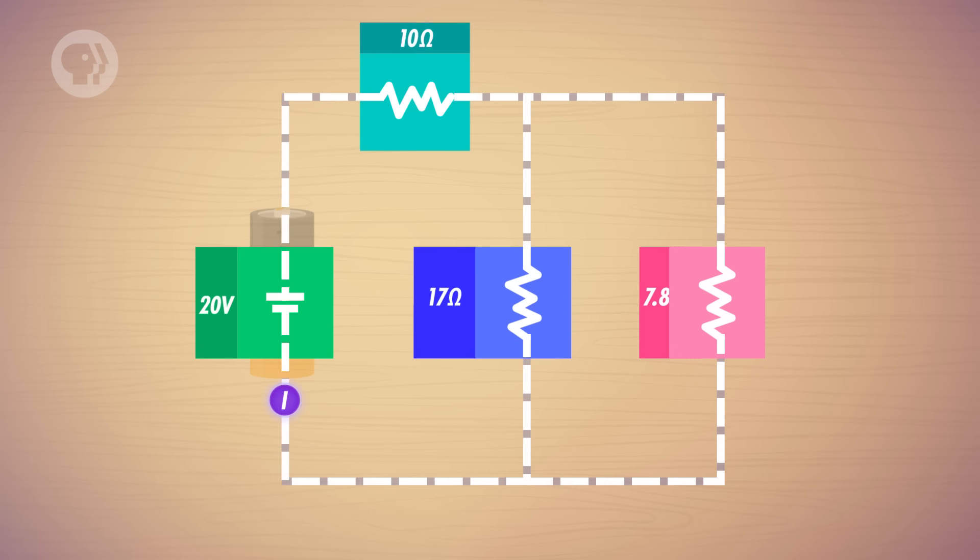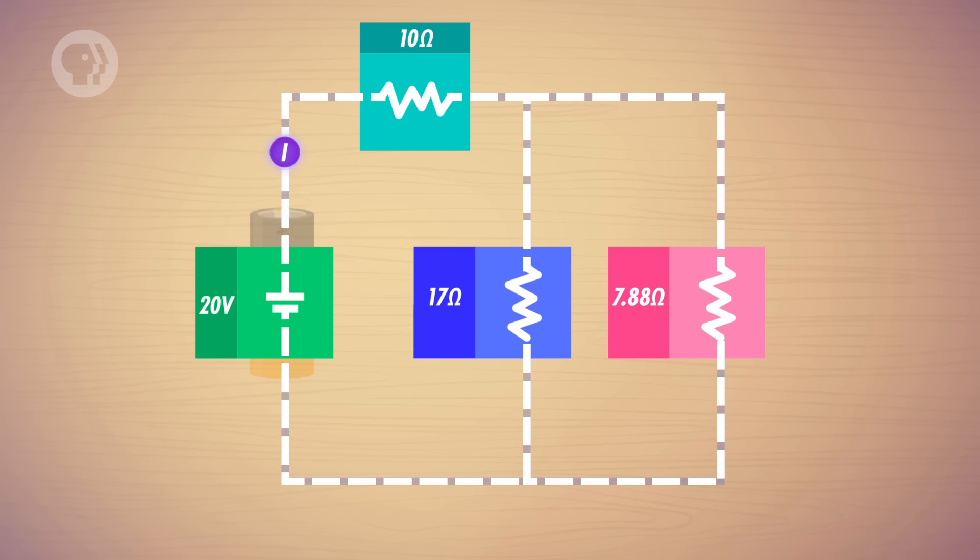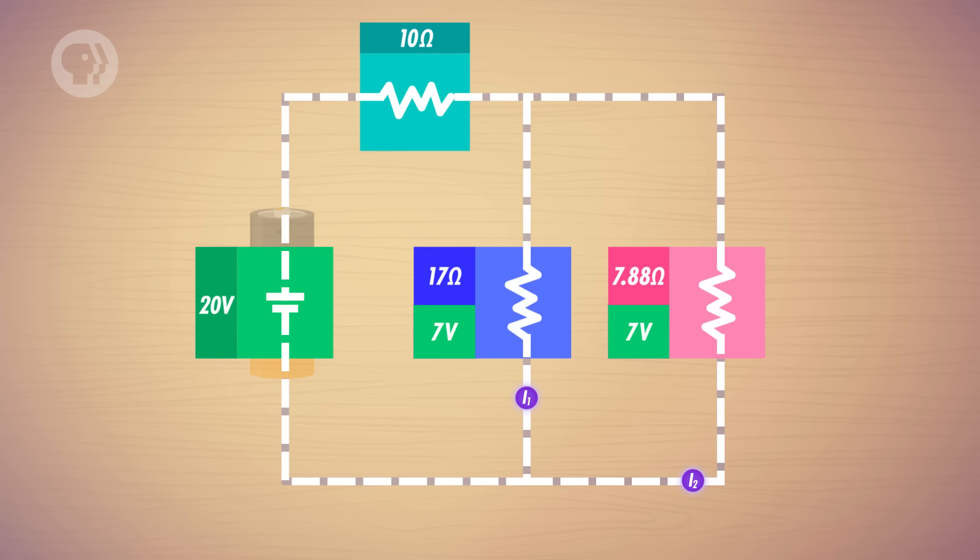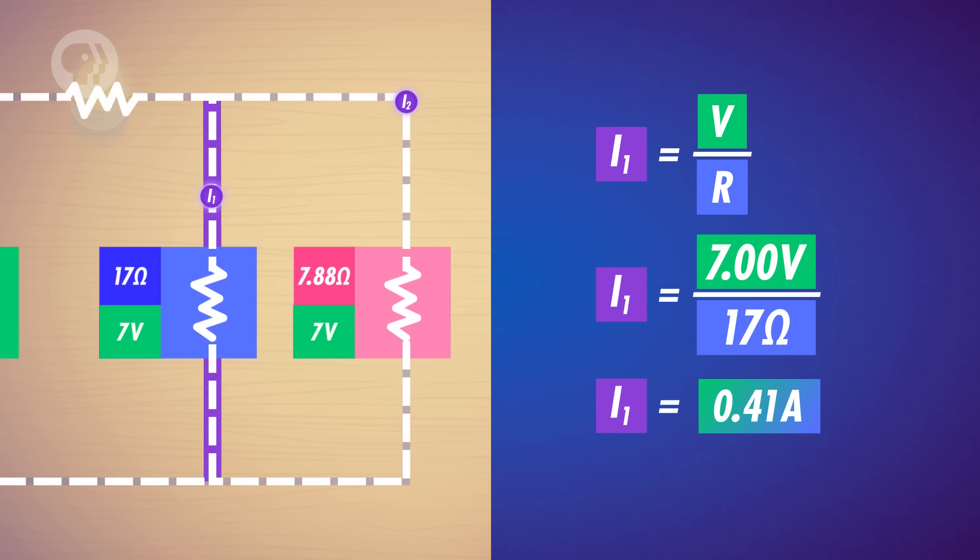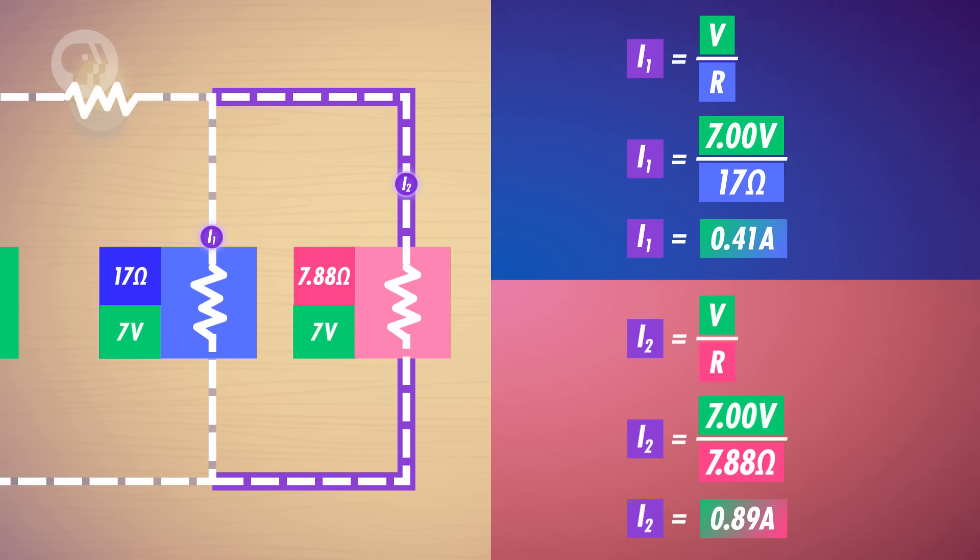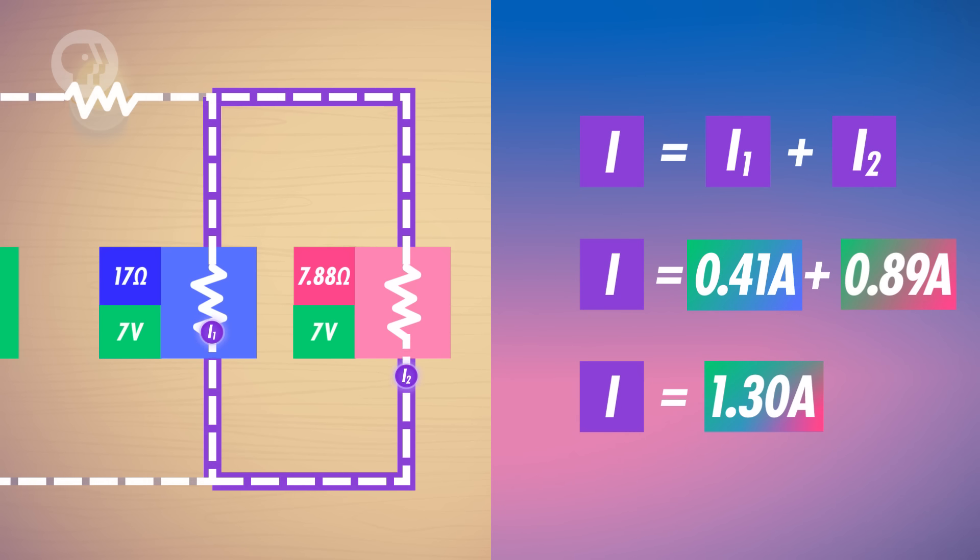In order to complete the rest of the circuit, let's expand the 5.38 ohm resistor back out again, to those two resistors in parallel. Now, you know that any two resistors in parallel have the same voltage drop. So both the 17 ohm resistor and the 7.88 ohm resistor have a voltage drop of 7 volts, just like when they were collapsed into one. But the current through each branch is not the same. Since you know the resistance of, and the voltage across, each resistor, you just use Ohm's law again to calculate the current through each wire. The 17 ohm resistor with a voltage drop of 7 volts will have a current of 0.41 amperes. And the 7.88 ohm resistor with the same voltage drop of 7 volts will have a current of 0.89 amperes. And look at this! If you add these two currents together, they equal the 1.3 amperes. That's the same value for the current that enters the junction, where the wires split. This must be true to satisfy conservation of charge, because remember, what goes in must come out.